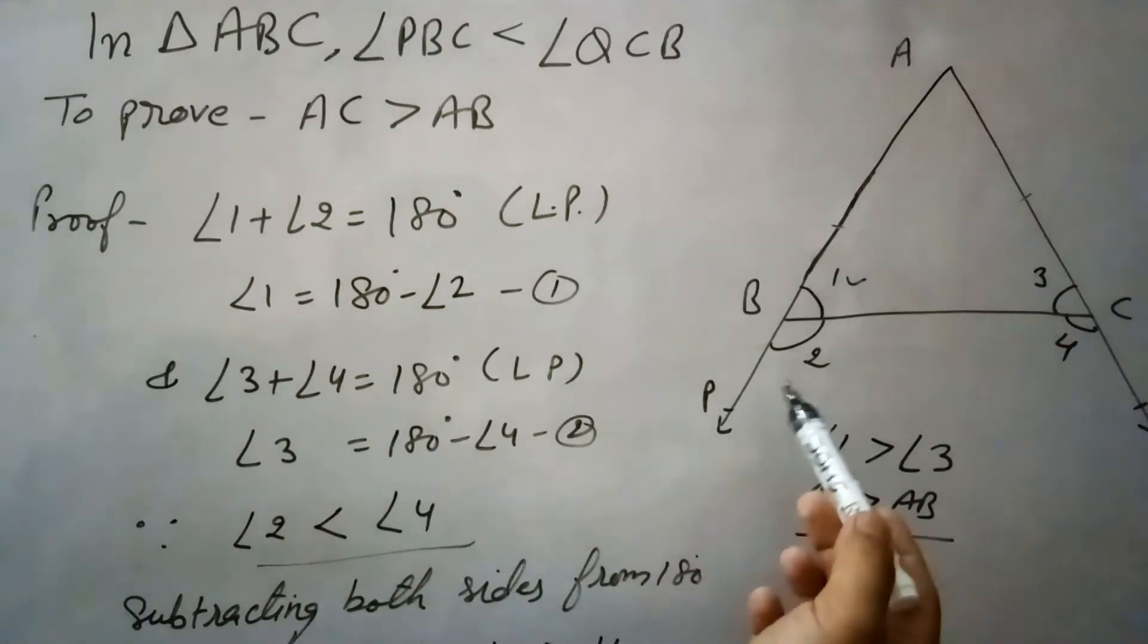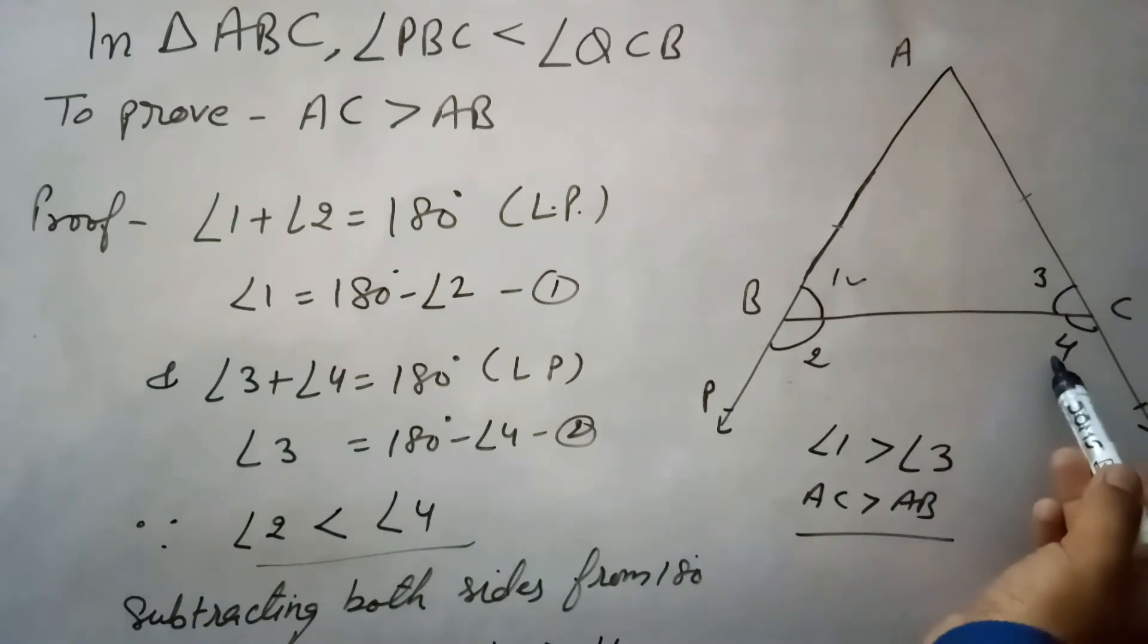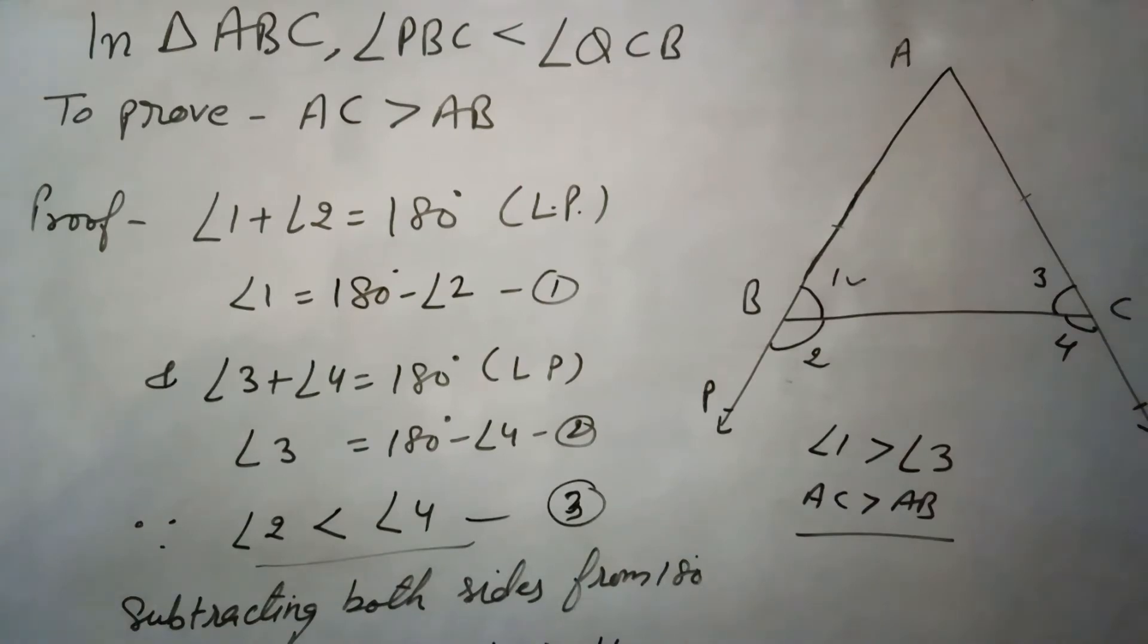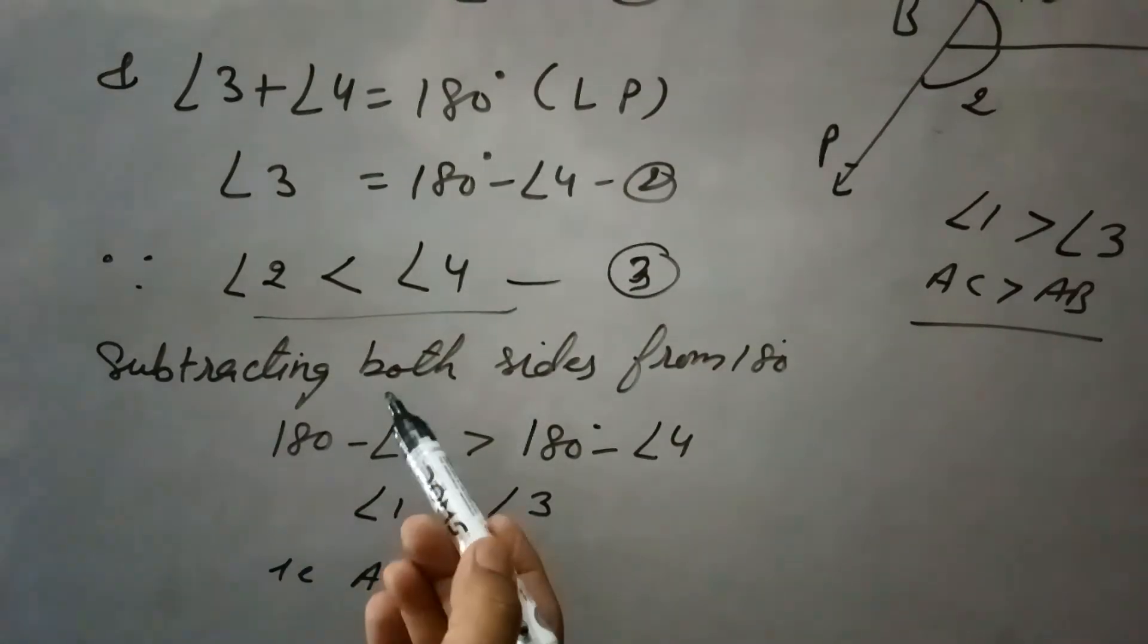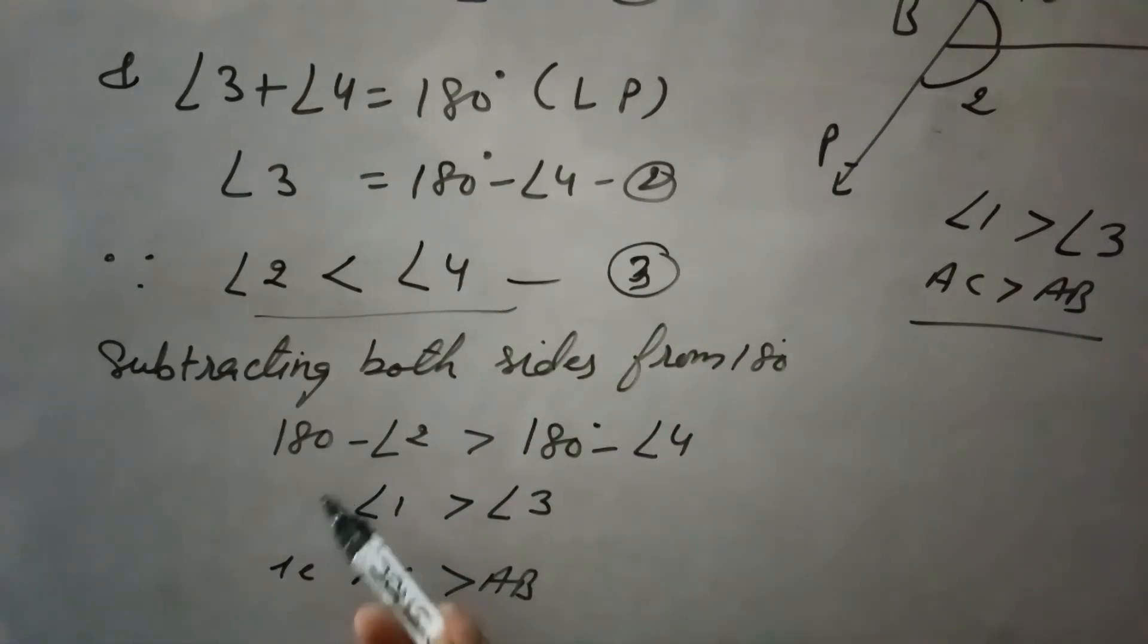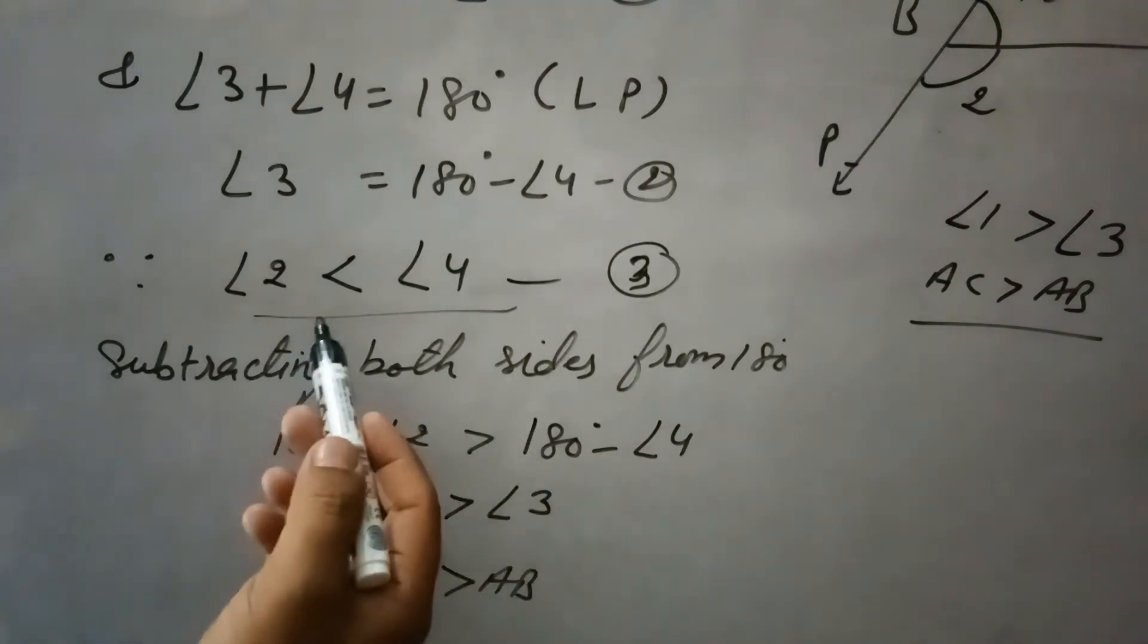So we will subtract both sides from 180. When we subtract these both sides of equation 3 from 180, we get 180 degree minus angle 2 and 180 degree minus angle 4. This is the case of inequality, so this sign will change—less than will become greater than.